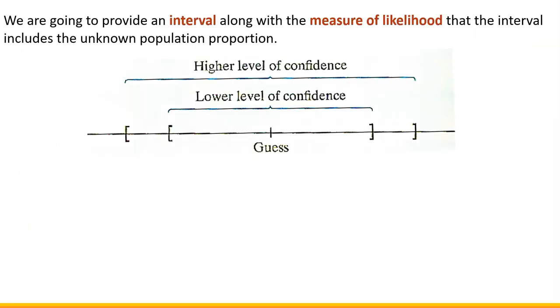We will never know what population proportion is unless we survey each individual in the population. However, we're going to be able to provide an interval like a range as well as certain measure of likelihood that that interval includes the unknown population proportion. And that measure of likelihood we call level of confidence.